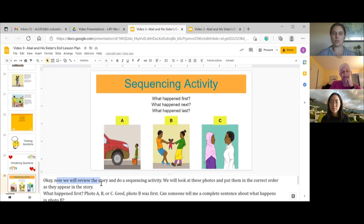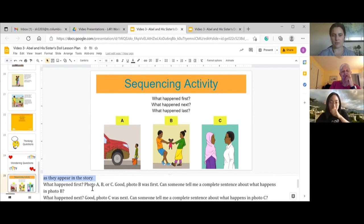Now we will review the story and do a little sequencing activity. So we will look at these photos and put them in the correct order as they appeared in the story. So you see here we have photo A, photo B, and photo C.